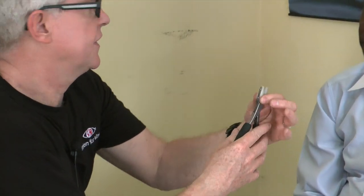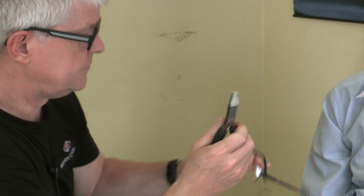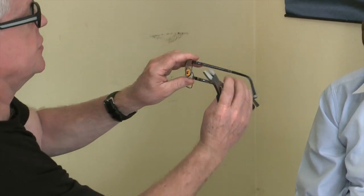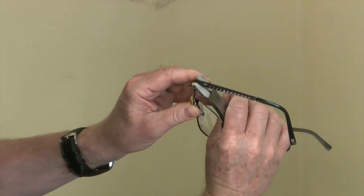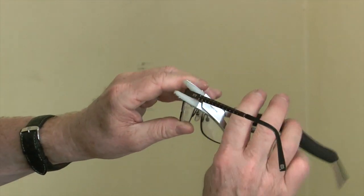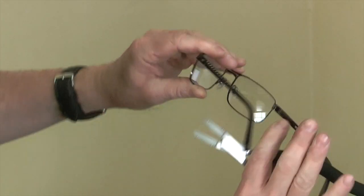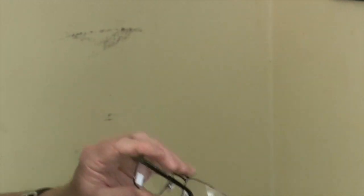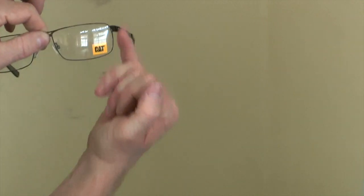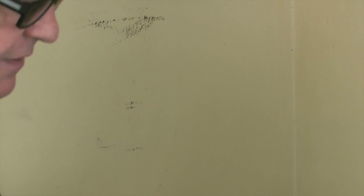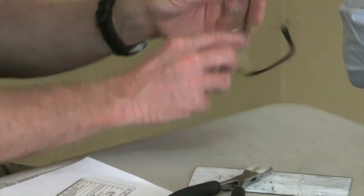We use these pliers — the ones that have got the nylon fitting on them — and the reason for that is so you don't scratch the frame. What you do is you place those pliers on the lug and then you can just bend it gently and alter that angle. You can see that the angle has been increased between the side and the front. If I put the glasses down, they won't be the same because I've altered one of these.